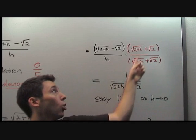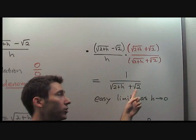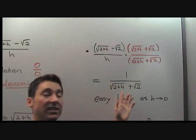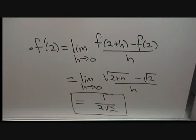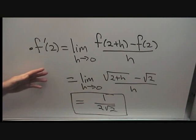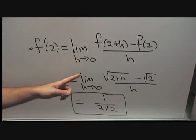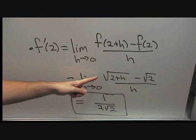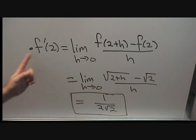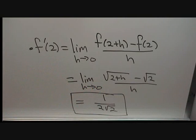After simplifying the whole expression, we obtain one over root two plus h plus root two. This is a much easier limit to evaluate as h goes to zero. Finally, to answer what is f prime of 2, we use the definition of the derivative. After plugging in the square root function, we found that f prime of 2 is exactly the limit we already evaluated, giving us our final answer.